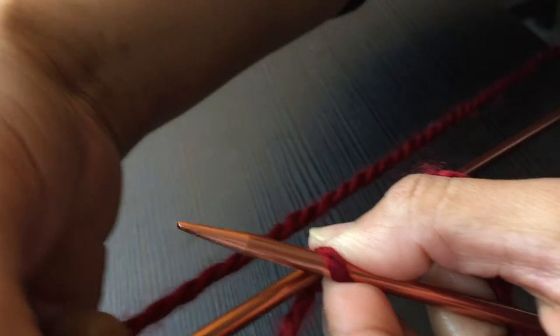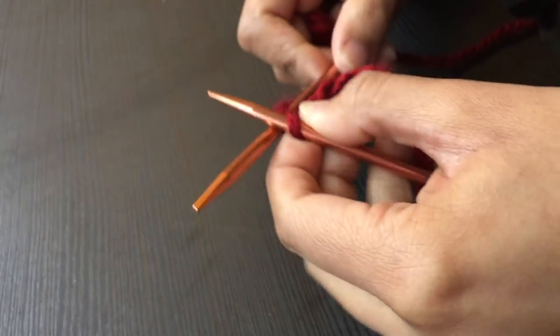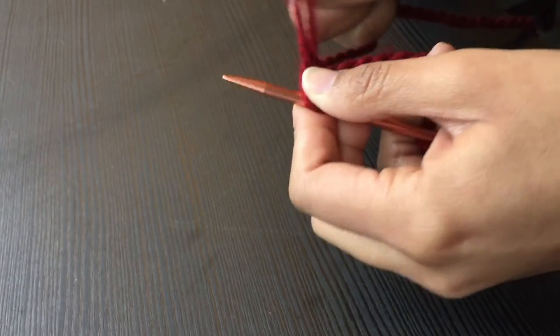Wrap the yarn from under and place it on top of the bottom needle. Dig the yarn out of the first stitch and drop it onto the first needle.